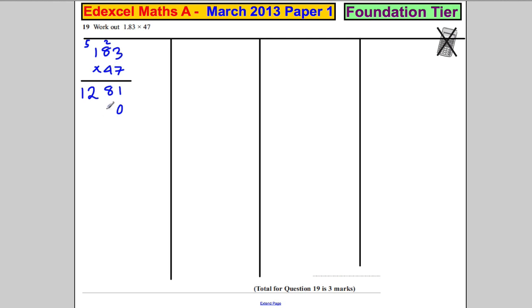Then you put down a zero, and you do four times three is 12. Put down the two and carry the one here. Four times eight is 32, add the one is 33, put down the three, carry the three. Four times one is four, add the seven, add the three, which is seven, and then you add them up in the column.